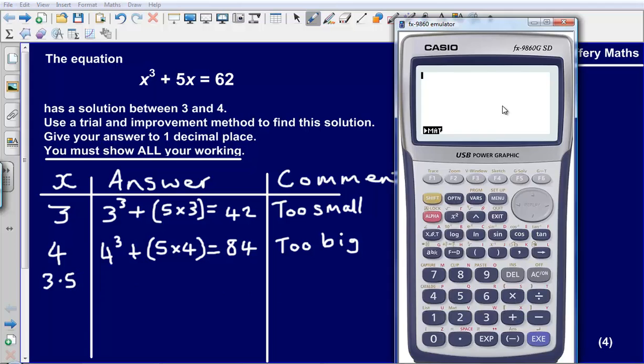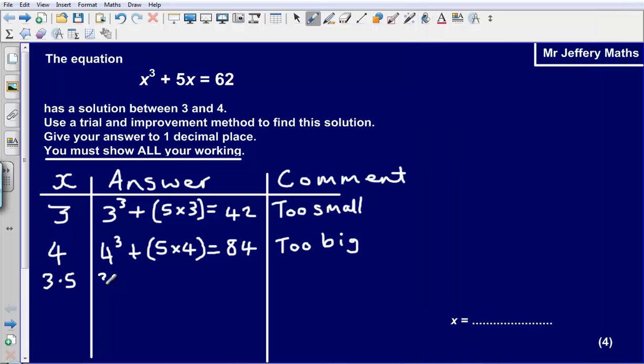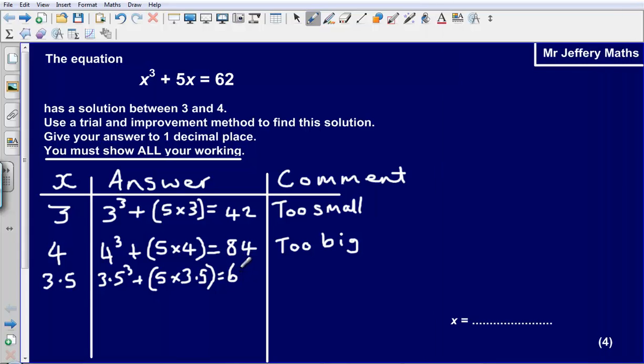So let's get our calculator out for this one. So what I am going to do now is I am just going to substitute in 3.5³ + (5 × 3.5) and that is equal to, let's just put that into our calculator. So I have got 3.5 cubed plus 5 times 3.5 and that gives me an answer of 60.4. So 60.4, that looks like a much better guess. We are almost at 62, however it is still too small.